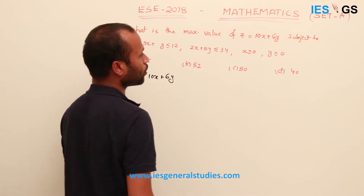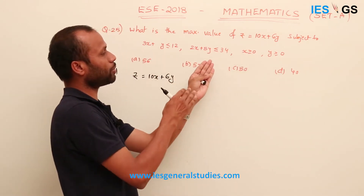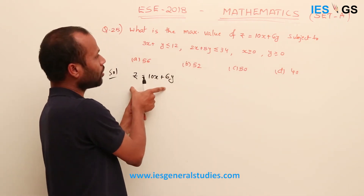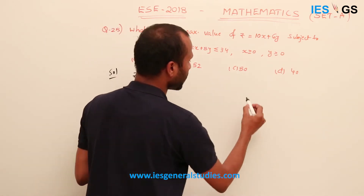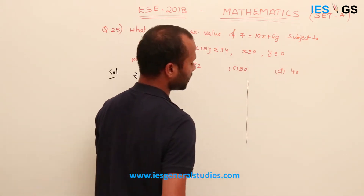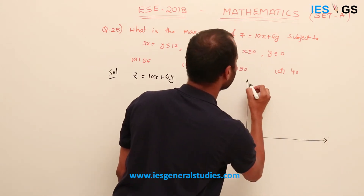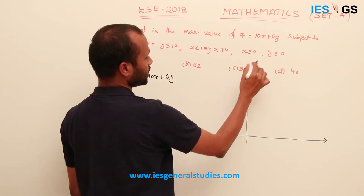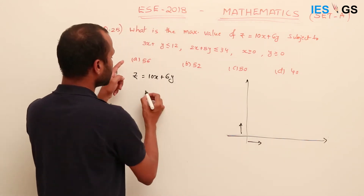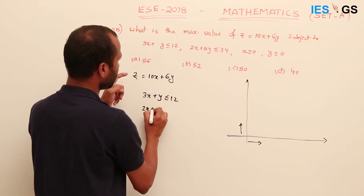Out of these four constraints, whatever are the boundary values of x and y, we have to find out, then substitute in z — whatever maximum value of z we get, that would be the answer. Since two constraints involve x ≥ 0 and y ≥ 0, we take the graph only in positive x and positive y. The other two constraints are 3x + y ≤ 12 and 2x + 5y ≤ 34.